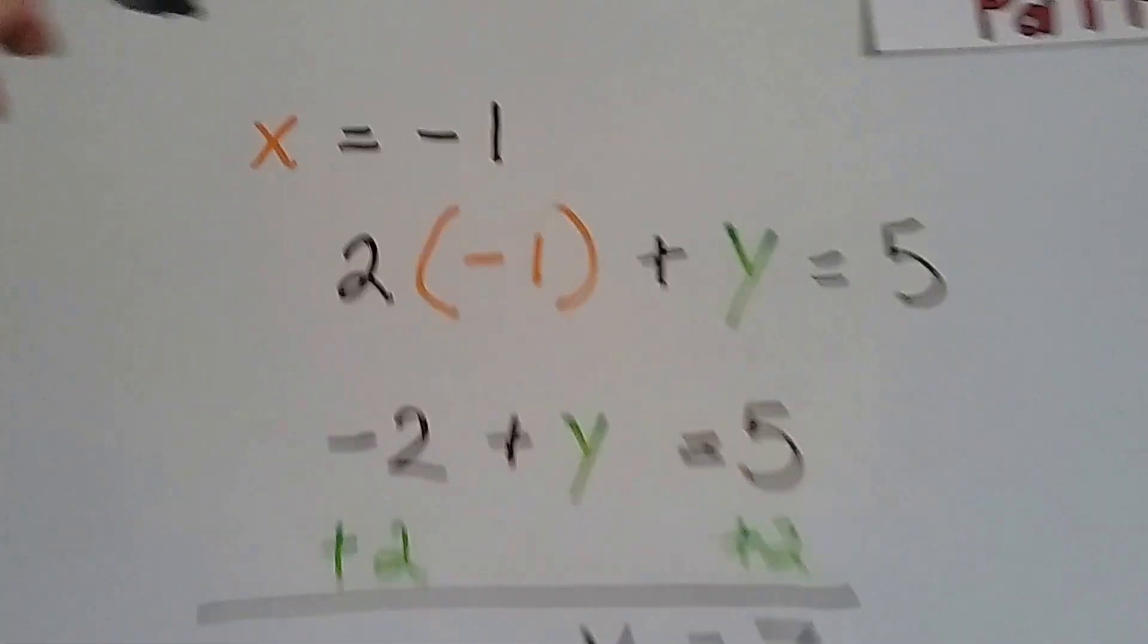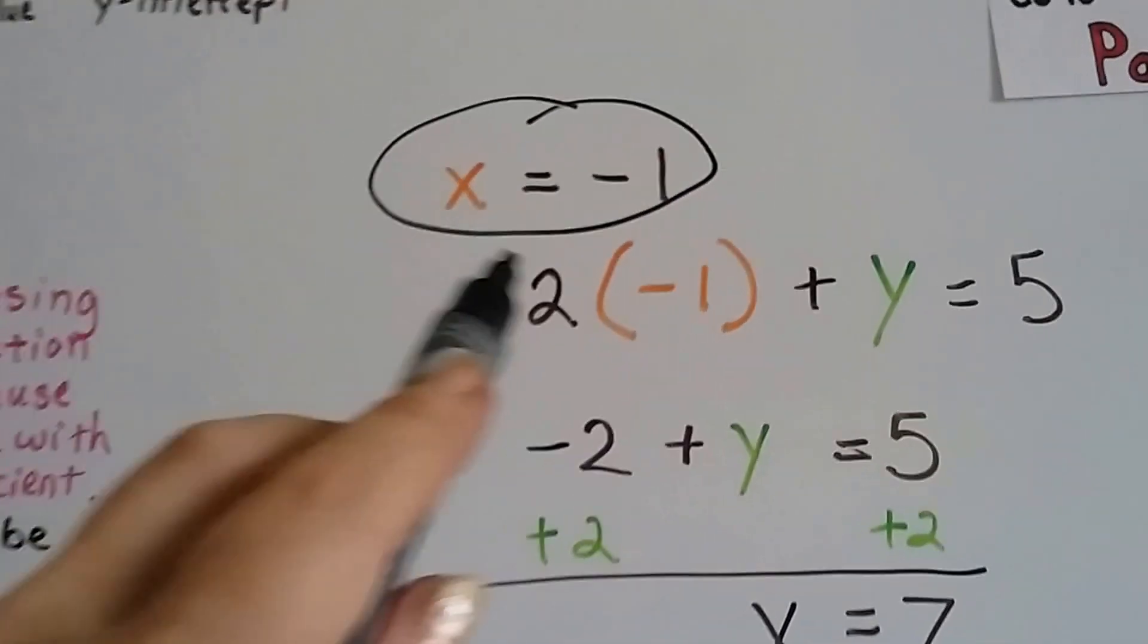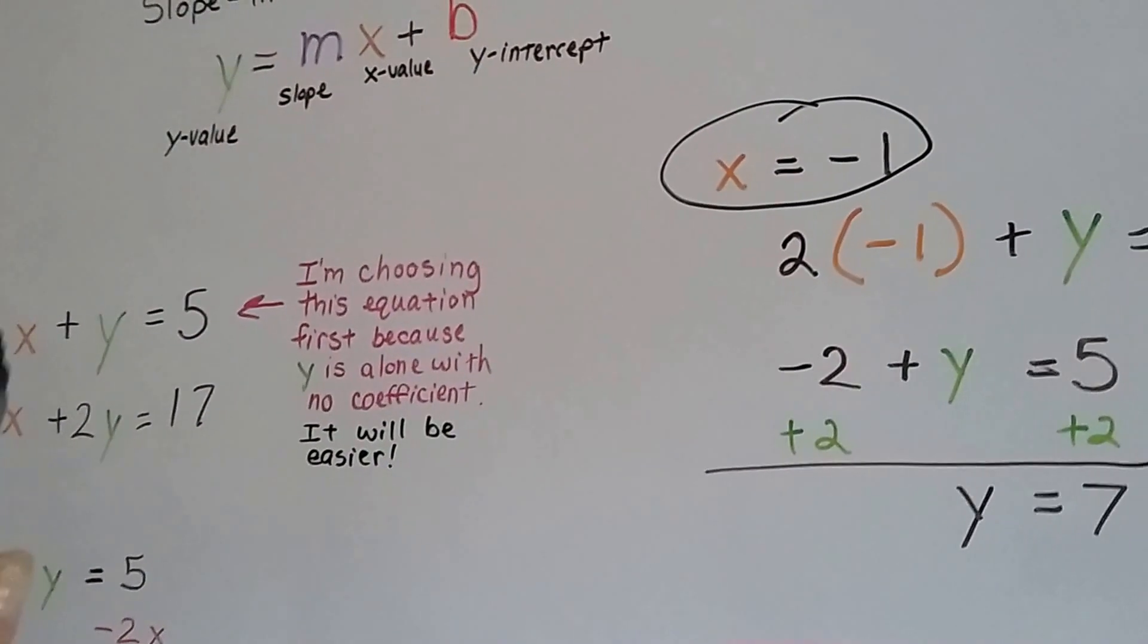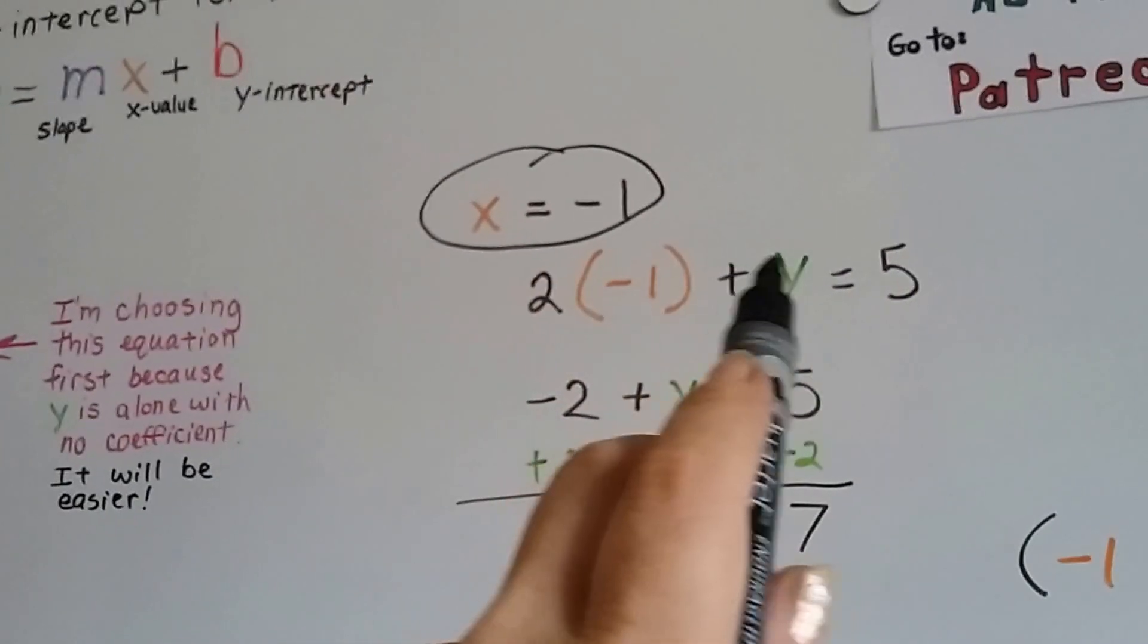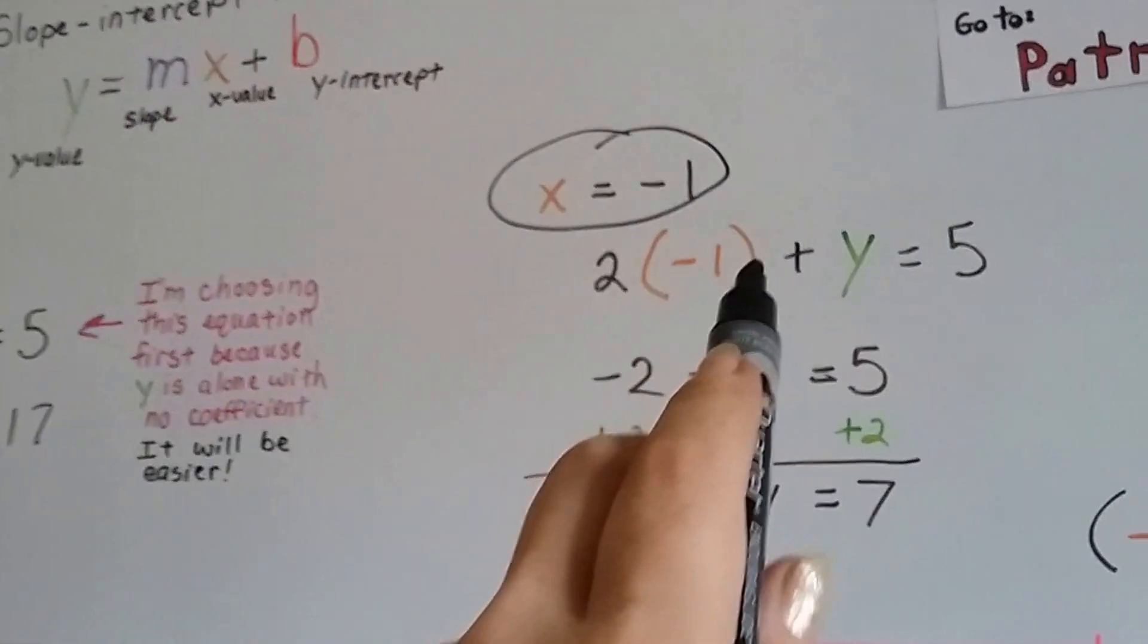So we know x is equal to negative 1, we got that far. So now we're going to plug it in to the first equation where that x is. So instead of 2x plus y equals 5, we're going to have 2 times negative 1 plus y equals 5. We just put it wherever the x was.